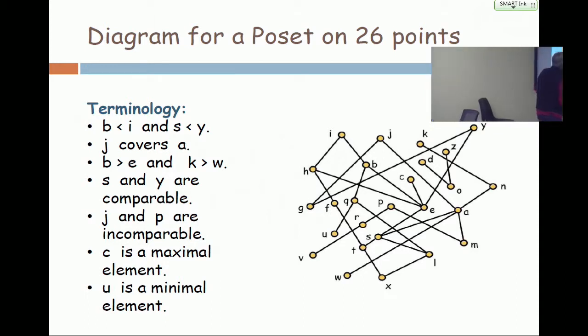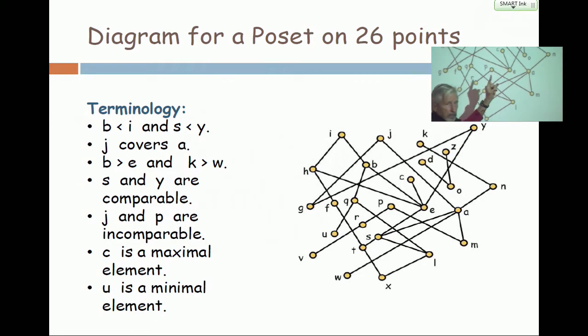J and P. Let me find J and P. Where is, I see P. J is up there. Now, if you say that J and P are comparable, then one of them has to be bigger than the other one. Which one do you want to make bigger than the other? Then you have to be able to get from J to P by coming down straight down edges. You can't do that. So J and P are incomparable.